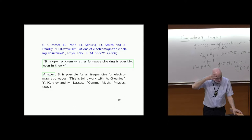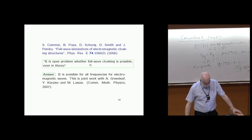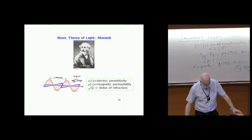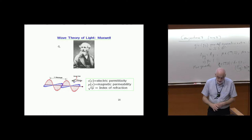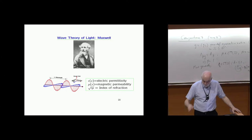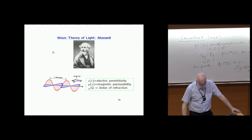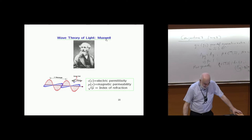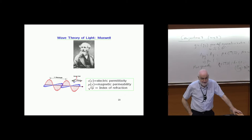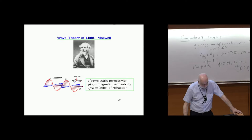The wave theory of light is more complete than the ray theory and explains diffraction and other phenomena. Maxwell equations — the theory from the 19th century with the most applications today — show that light is an electromagnetic wave. The electromagnetic parameters are epsilon and mu, and the index of refraction is the square root of epsilon times mu. Maxwell must have been ecstatic to discover that the speed of propagation of light is 1 over the square root of epsilon times mu.